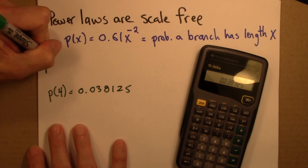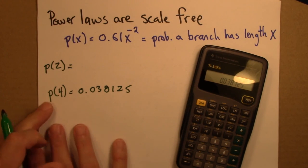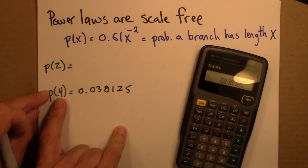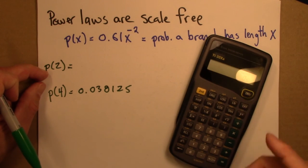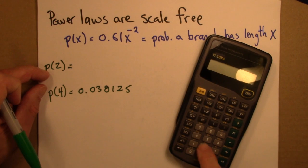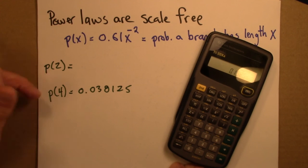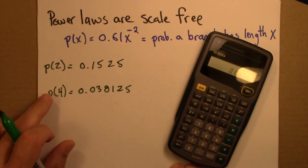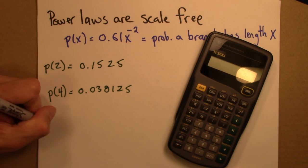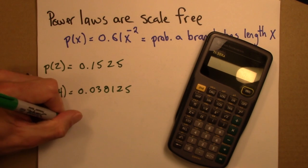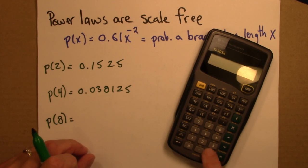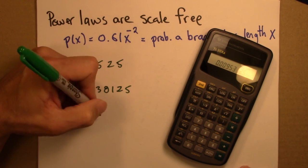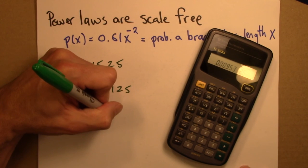Then I could also ask about p(2). Suppose I'm this size, or I think I'm this size, and I want to know how many branches are there that are half of my size. Well, I can calculate that, again, just into this formula, plugging 2, 2 to the x. And I get 0.1525. And let me do one more, let's think about p(8). So 8, 2, 0.00953.